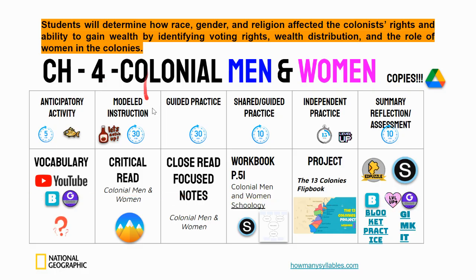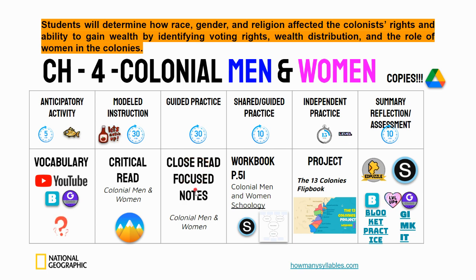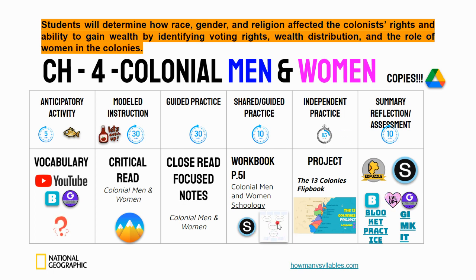As you can see here from the agenda, we see the same success criteria. We did this in a critical read, then we read closely and highlighted some of the phrases, and then we went straight to the colonial men and women chart so you all could fill it in. I know most classes had an opportunity to at least start filling in this assignment.